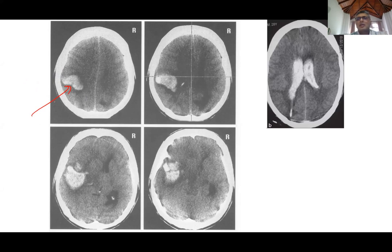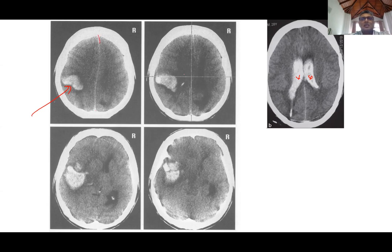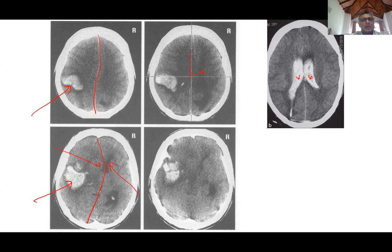Here you can see the lateral ventricles filled with fresh blood — whitish appearance. You can also see the midline has been shifted. The anterior horn of the lateral ventricle on one side is totally obstructed and collapsed, while the other side's anterior horn is visible. This midline shift is due to raised pressure on the side of the bleeding. This represents intracerebral hemorrhage.